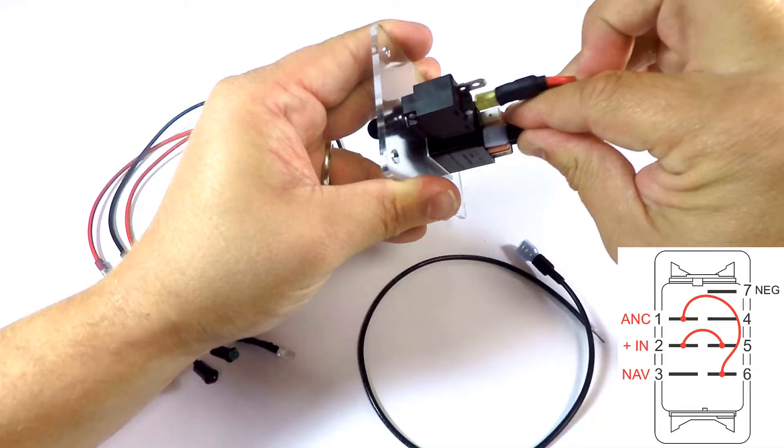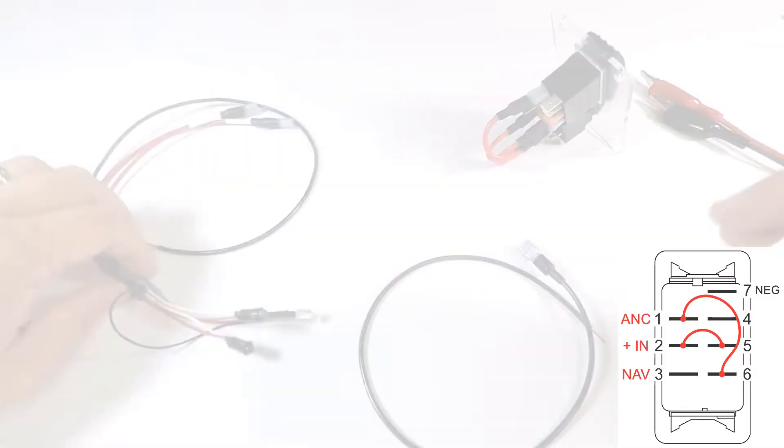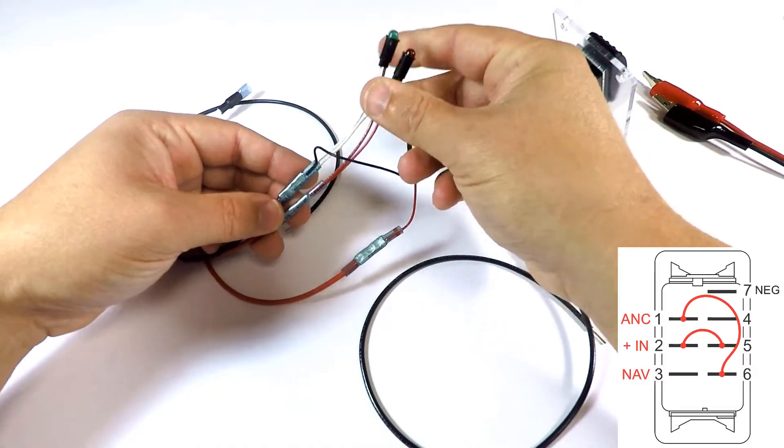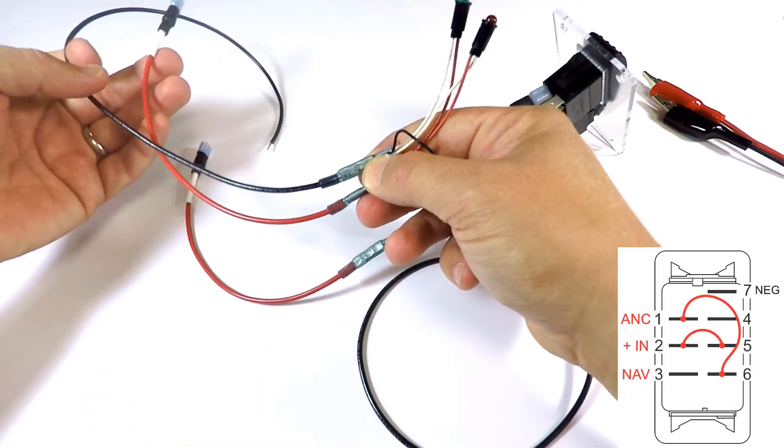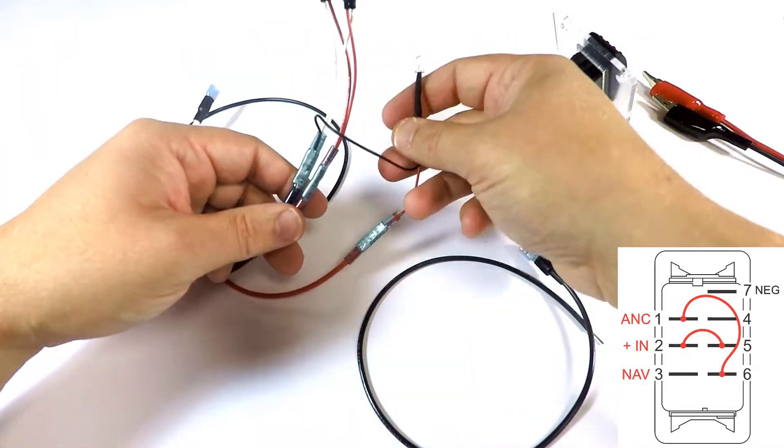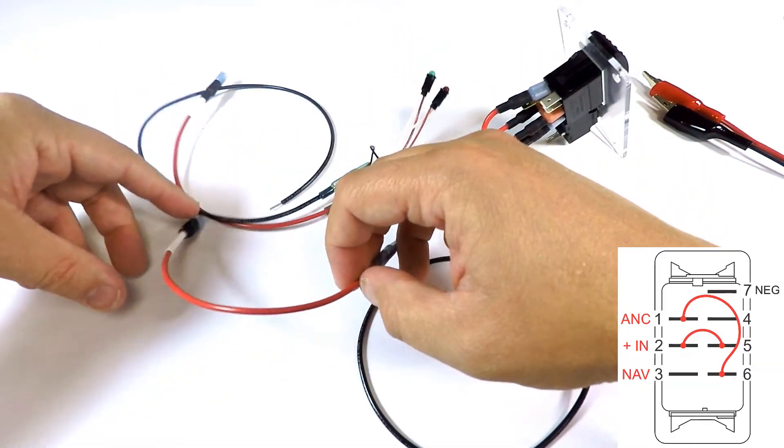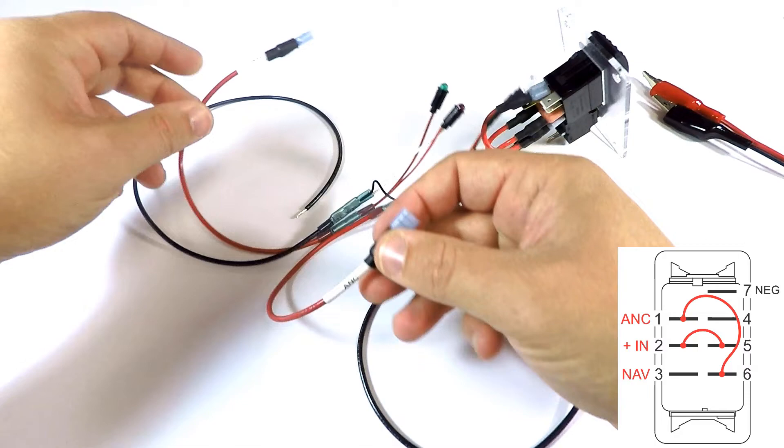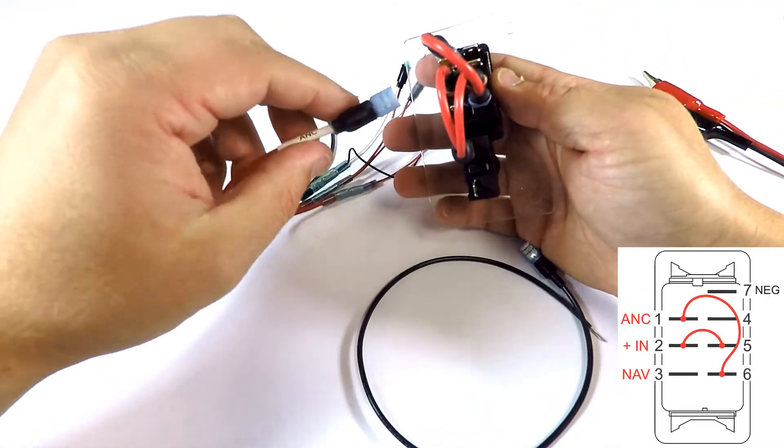Let me show you this little test light we've got made up. We've got a red and green LED and a white LED. The red and green are attached together, and the white is attached to a single lead that says anchor. Red and green say nav, just like you'd expect.